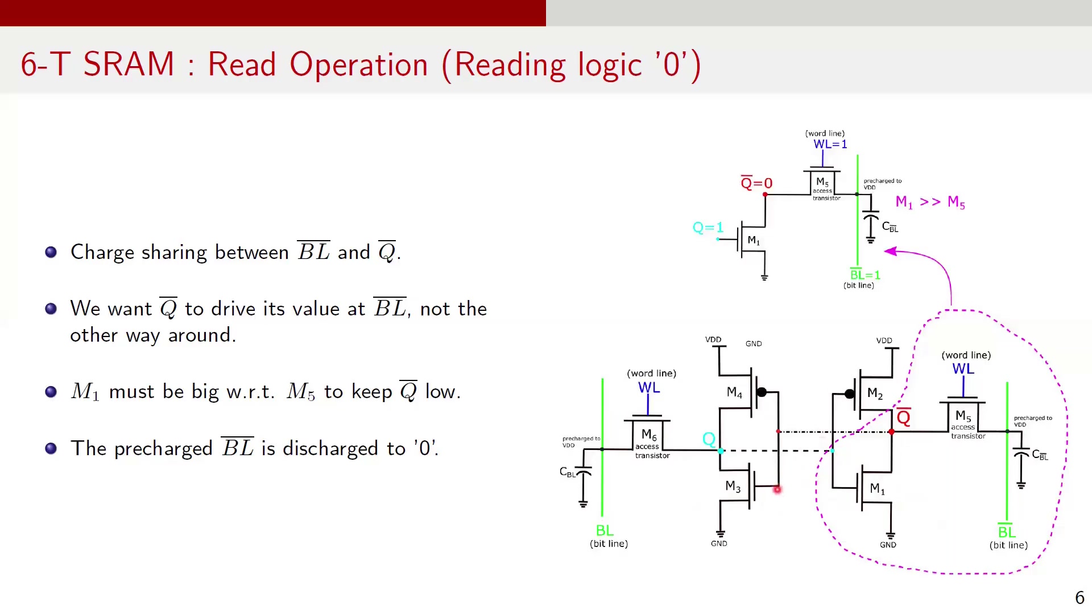During the read operation in the SRAM cell, something interesting happens. When accessing the node storing 0, for example, node Q bar here, the voltage at Q bar can momentarily rise above 0 due to charge sharing. If this rise in the voltage is more than the switching threshold of the inverter, it can cause the stored data to be flipped, leading to a read upset. Read upsets can lead to data corruption and system instability, especially in the applications where data integrity is critical.